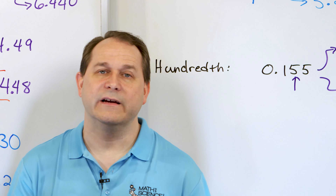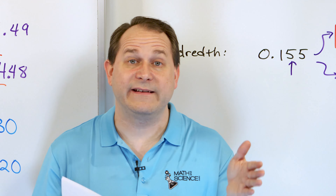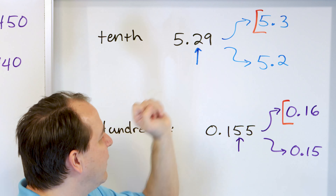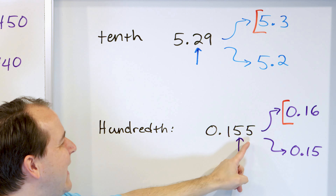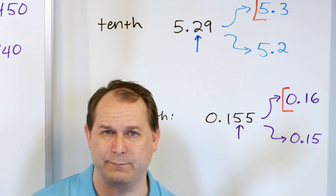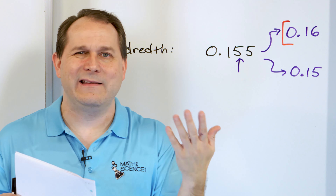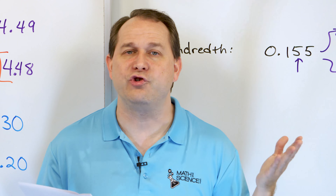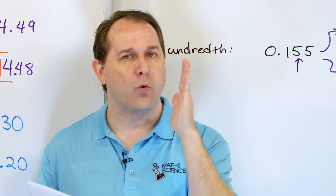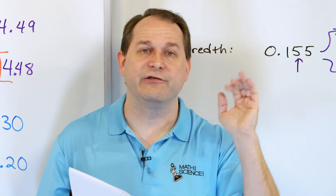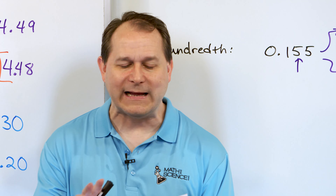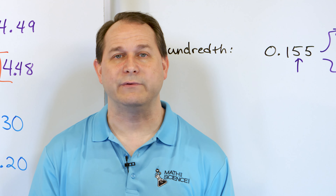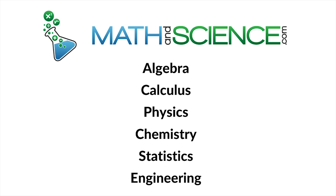We've conquered the idea of rounding decimals. When rounding to the nearest tenth, look at the hundredths position to decide what to do. When rounding to the nearest hundredth, look to the thousandths place. No matter where you're rounding, you always look one position to the right to determine whether you go up or down. Try solving all of these yourself, and when you feel confident, follow along to the next lesson at mathandscience.com.